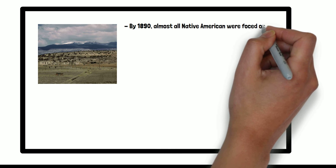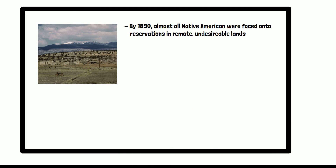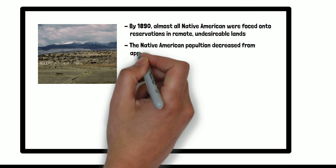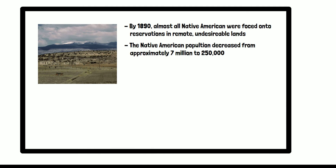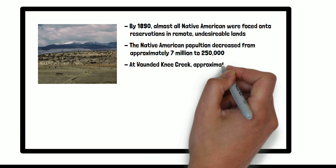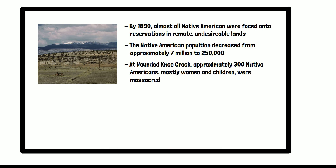By 1890, almost all Native American tribes were confined to reservations in remote, undesirable lands in the West, their numbers dramatically reduced. The Native American population decreased from approximately 7 million to 250,000. In 1890, what is considered to be the final conflict of the Indian Wars occurred near Wounded Knee Creek in South Dakota, when 300 Lakota Sioux, mostly women and children, were massacred by U.S. soldiers.